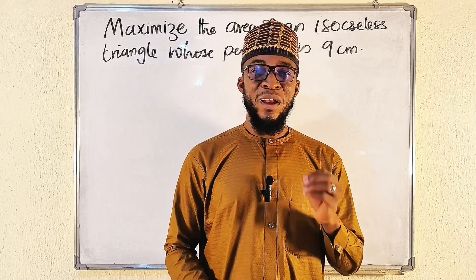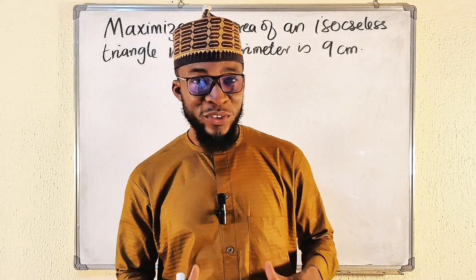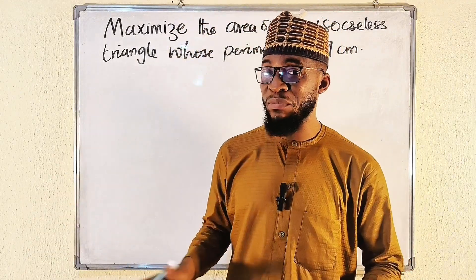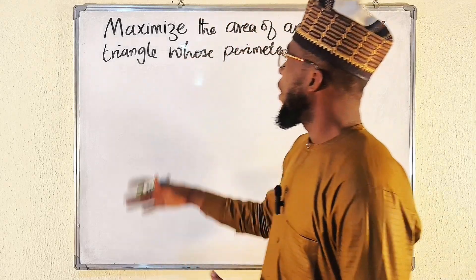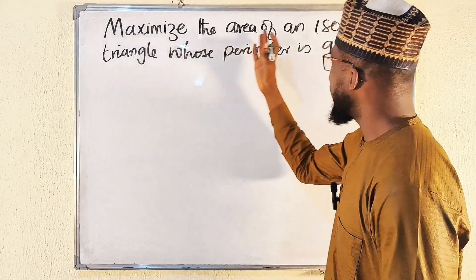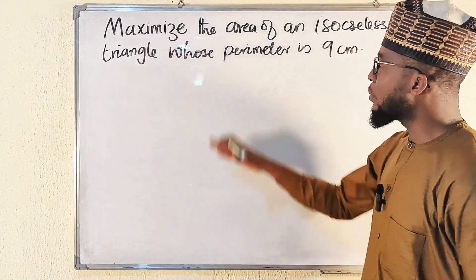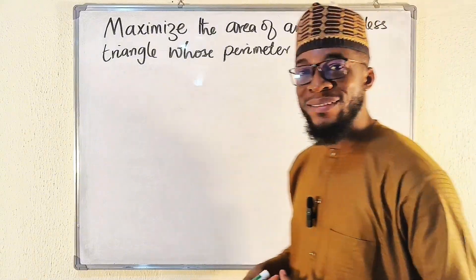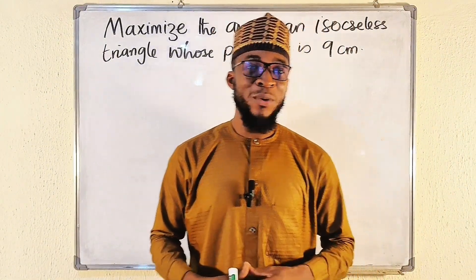Hello good viewers! In this tutorial, we are going to find a solution to this interesting optimization problem. We are asked to maximize the area of an isosceles triangle whose perimeter is 9 cm.